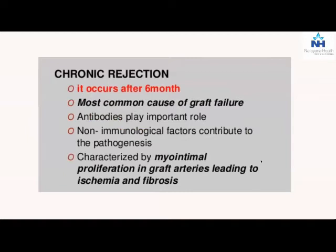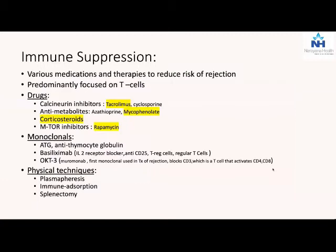Chronic rejection, as the term suggests, happens later on over long periods of time. It is a slow, indolent process that leads to graft loss over a long period of time, and this is by far the commonest cause of graft failure after transplantation - be it liver, lung, or kidney. Typically in the lung, the bronchi keep getting burnt out and you get bronchiolitis obliterans. In the liver, you might have loss of bile ducts. Over time, you have loss of tissue replaced by fibrosis. It is thought that antibodies play an important role. Nobody really understands how chronic rejection occurs or what we can do to prevent it - this is currently the bugbear of all transplantation.